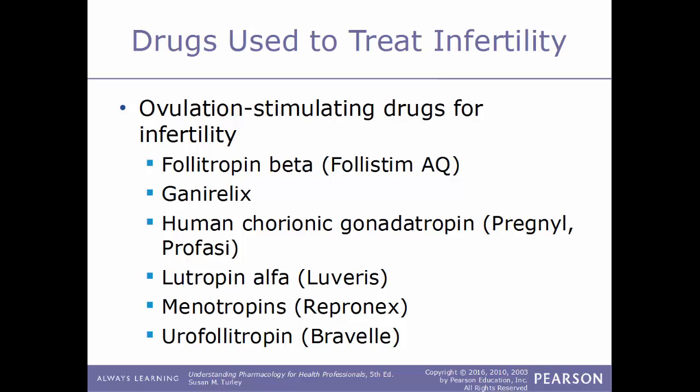Additional ovulation-stimulating drugs include ganirelix, human chorionic gonadotropin (trade names Pregnyl and Profasi), lutropin alfa (Luveris), menotropins (Repronex), and urofollitropin (Bravelle).